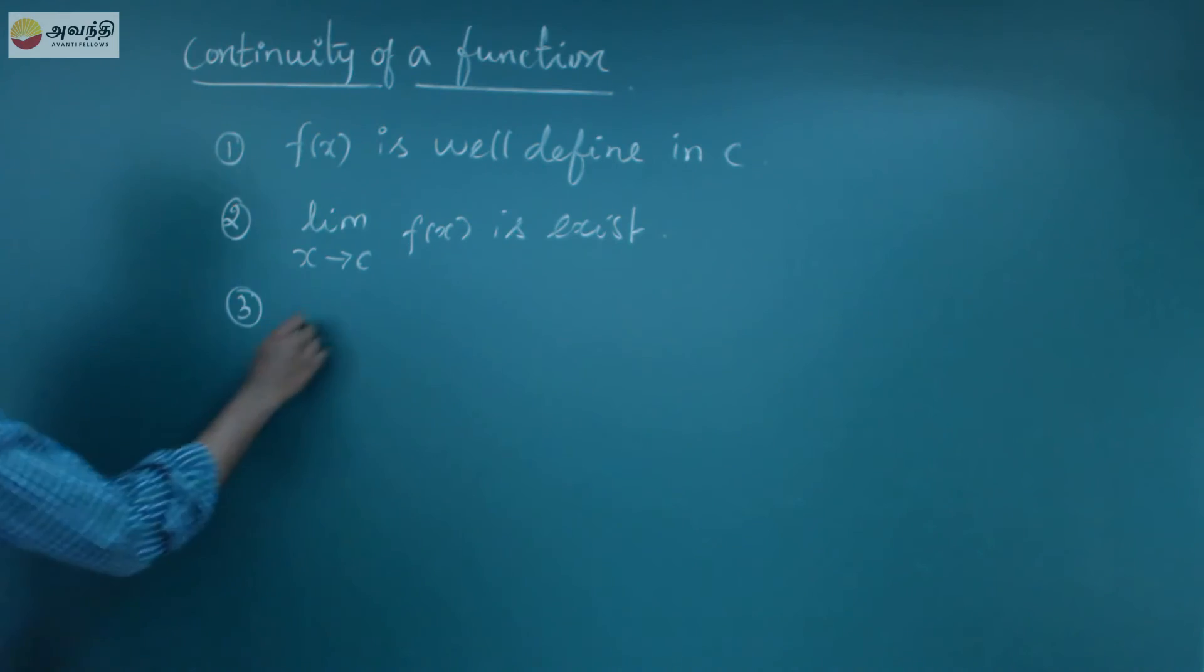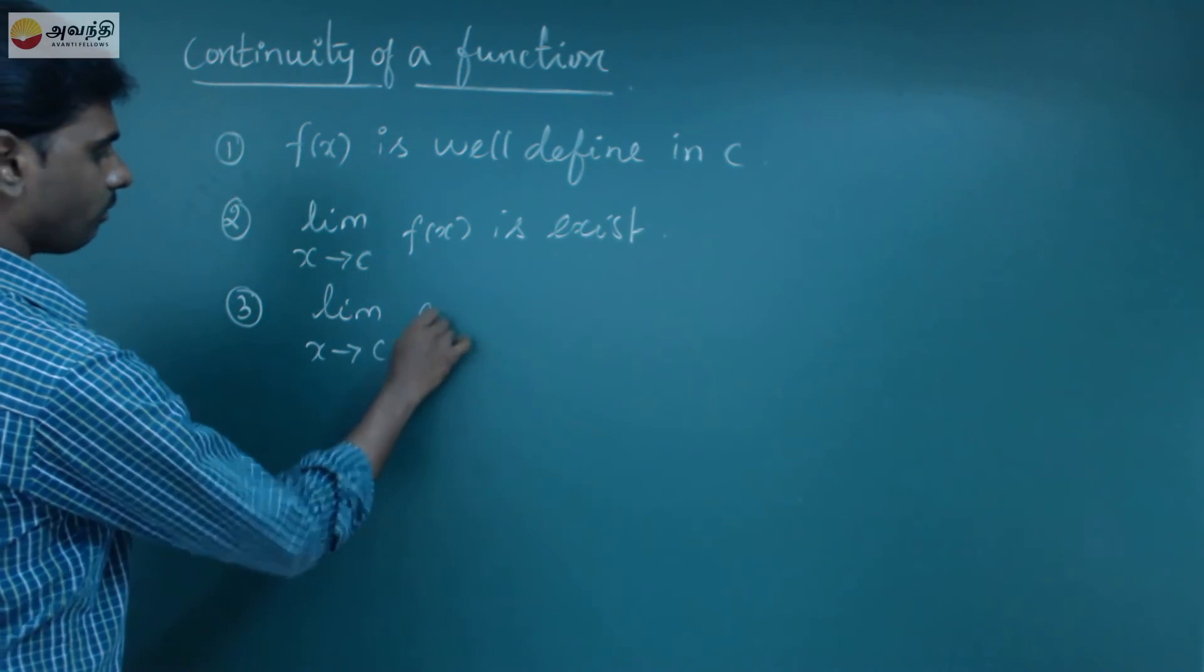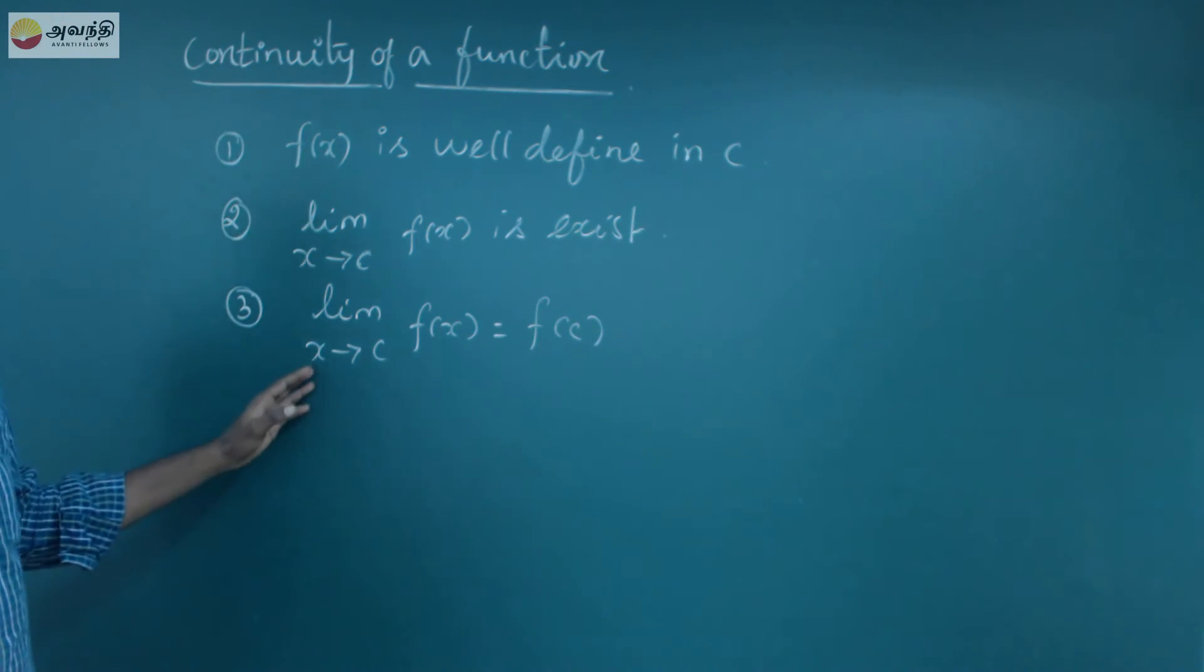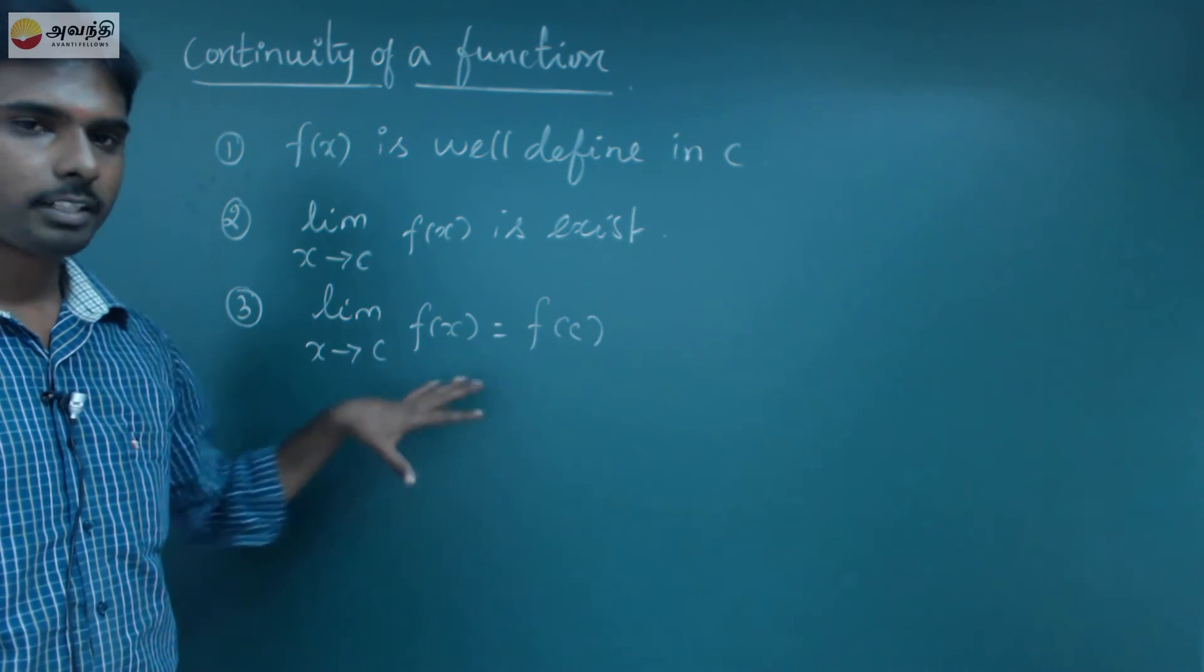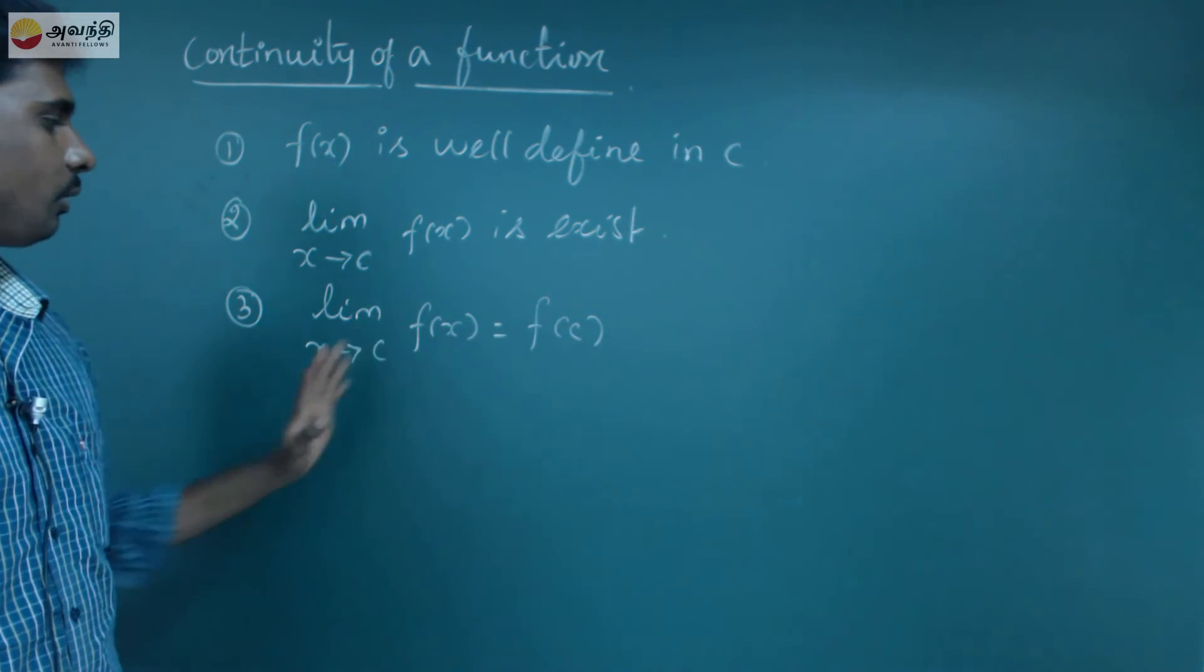Next, third condition: Limit as x tends to c, f(x) is equal to f(c). If we substitute that point in the function, we get one value. That value and the limit value, the two are the same.